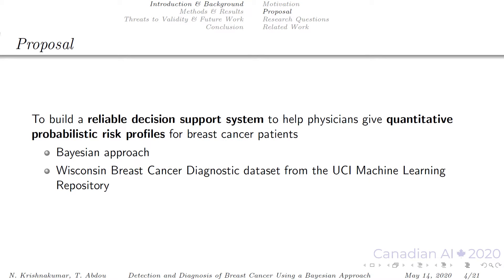As a solution we would like to build a reliable decision support system to help physicians give quantitative probabilistic risk profiles for patients. For our granular analysis we used a Bayesian approach and the Wisconsin breast cancer diagnostic dataset from the UCI machine learning repository, which is open source and publicly available. By using a Bayesian approach, our aim was to build a model that was reliable, reproducible and explainable rather than a black box model that lacks interpretability.